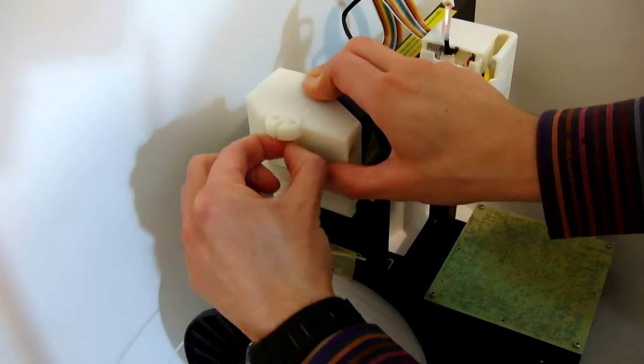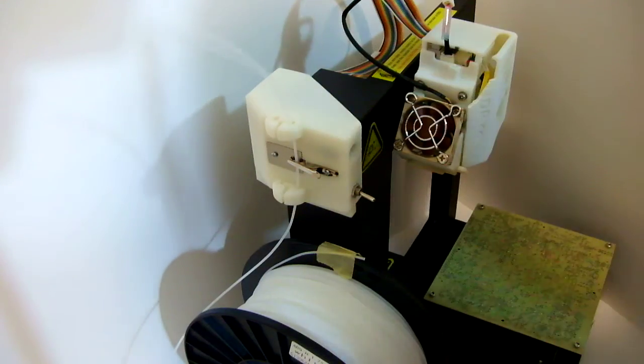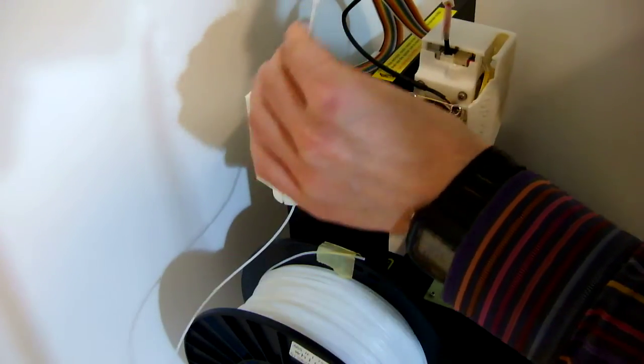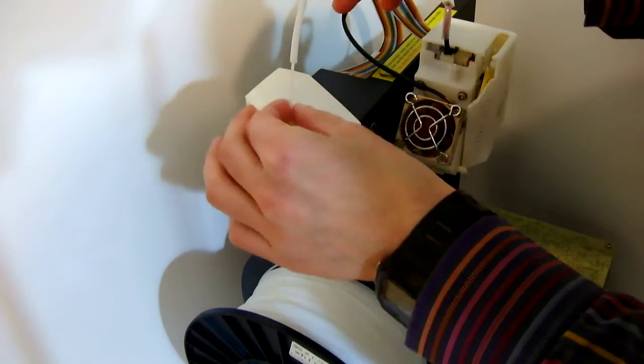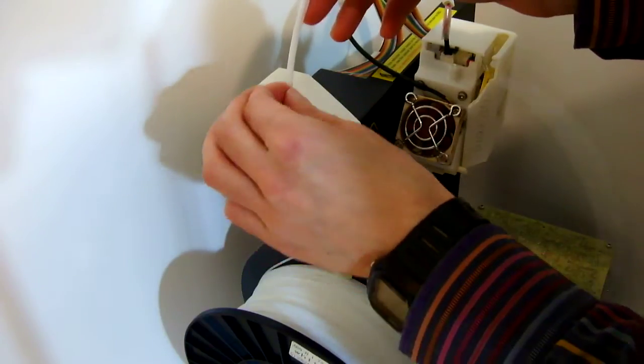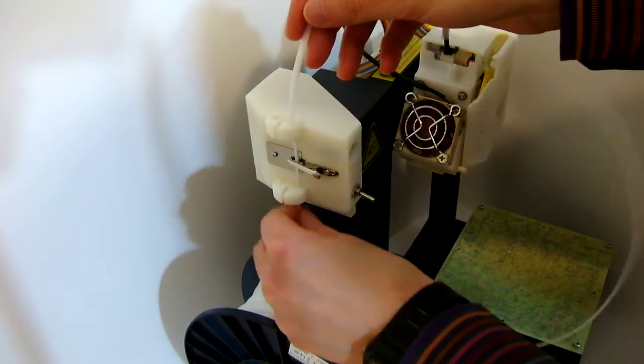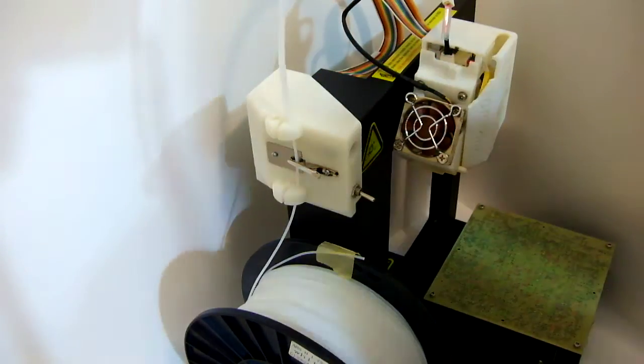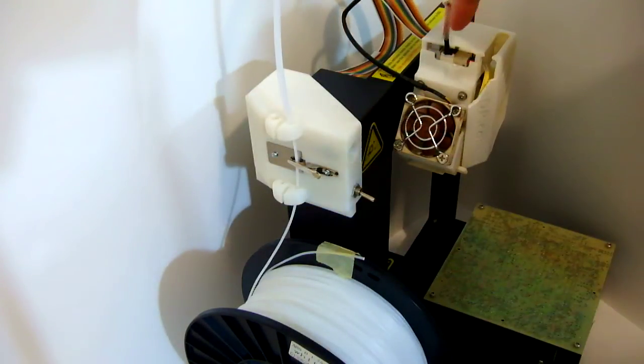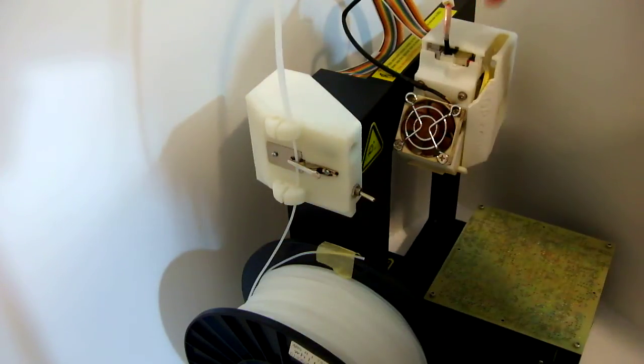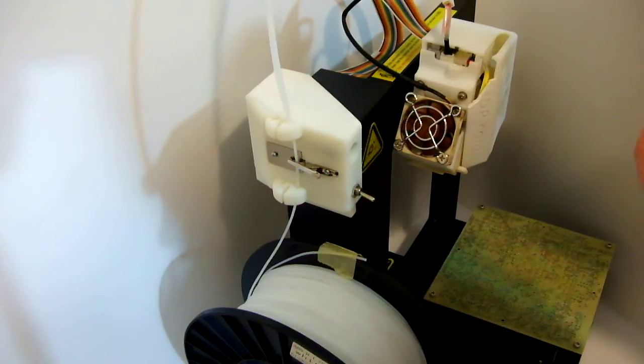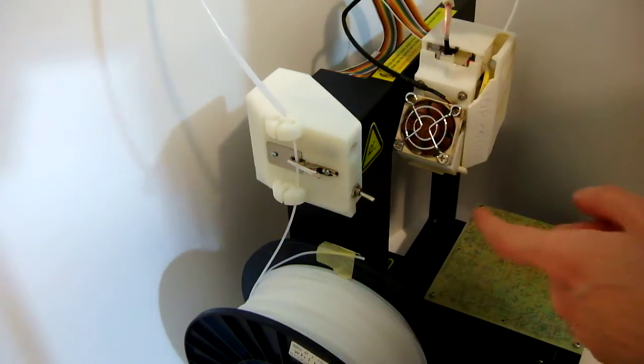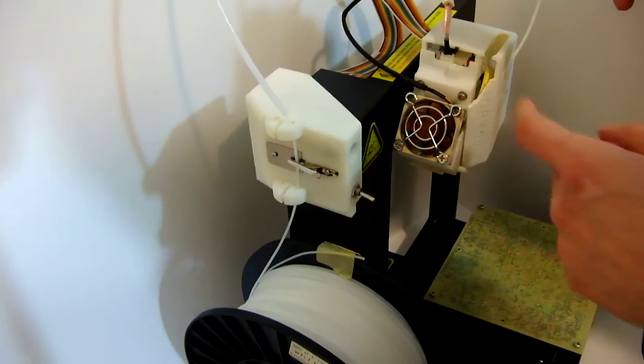Once the new filament is through the crocodile clip, tube guide, and filament guide, we wait until the old filament completely runs out in the extrusion head. We have to be very careful to put the new filament inside to let the printer continue printing.